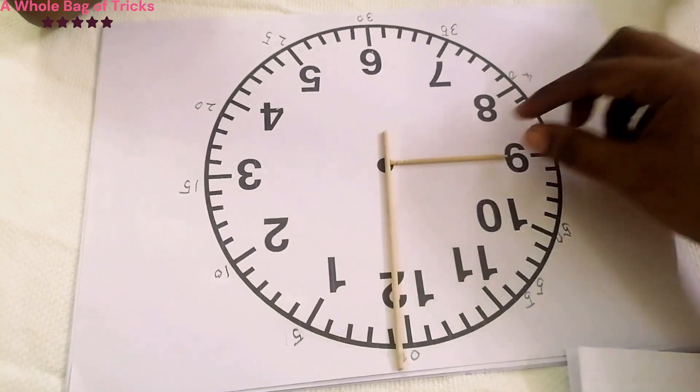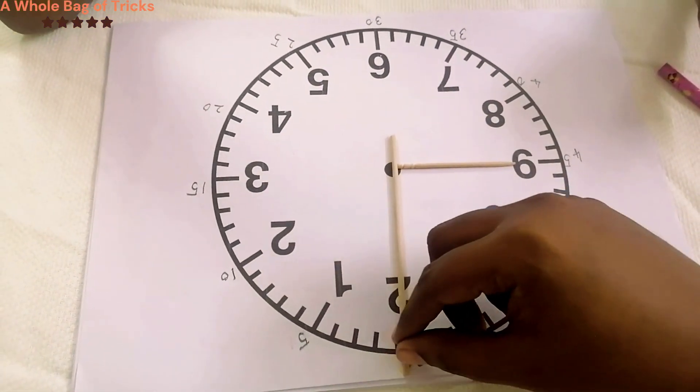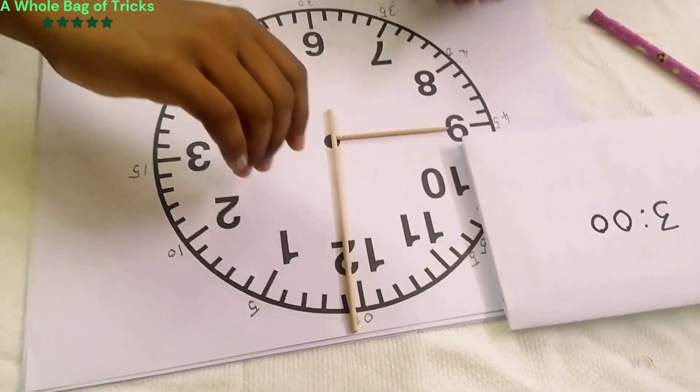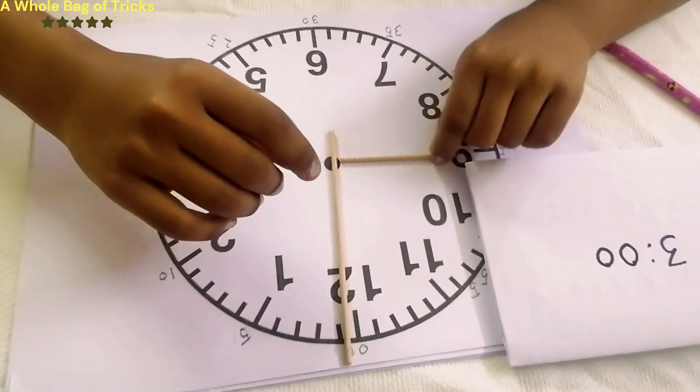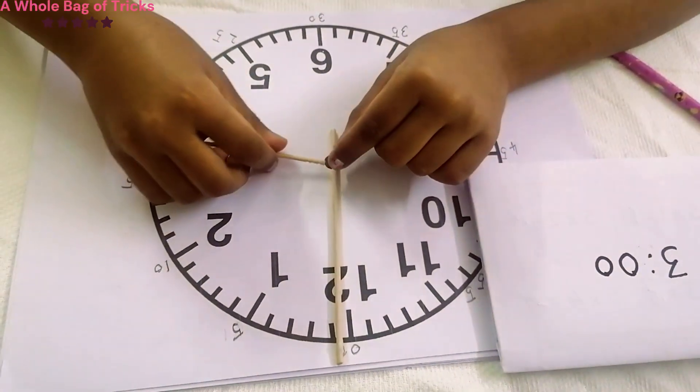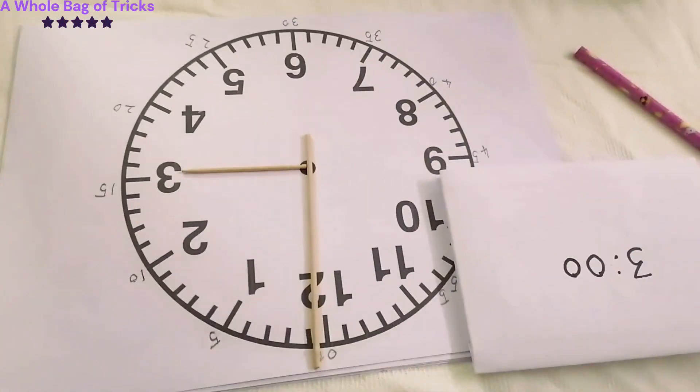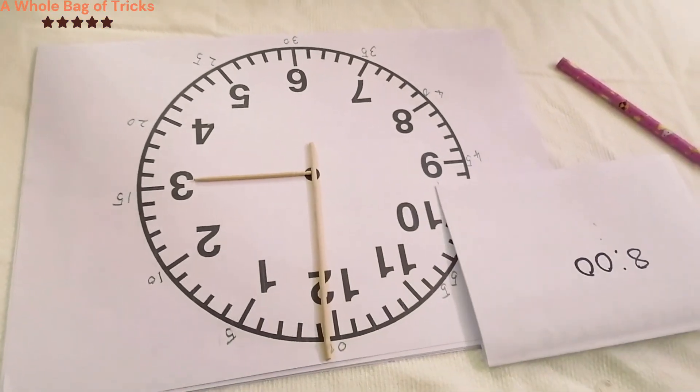Initially tell your kid that it is a game of matching. As the first step give your kid a sheet with the time written on it. You can either say it out or write it down on a sheet of paper. The best thing is to write it down on a sheet of paper. Use the same format: hours, a colon, and then the minutes.